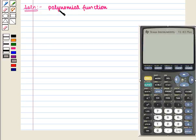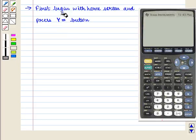We are given a polynomial function y equals 4x cubed plus 32x squared minus 9x minus 72. We will graph it using suitable window. Now this is the TI-83 plus calculator and we want to graph this polynomial function on it. First we begin with home screen and press Y= button.